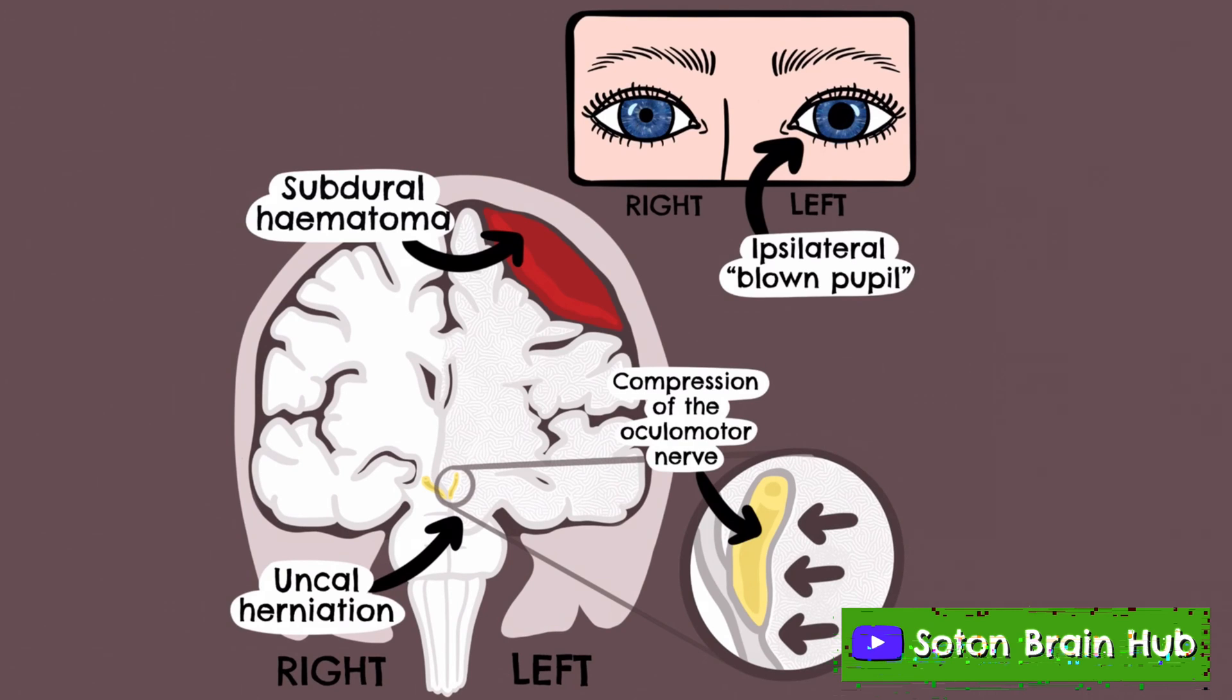colloquially known as a blown pupil due to compression of cranial nerve 3, the oculomotor nerve which carries parasympathetic input to the eyes and is located just medial to the uncus.